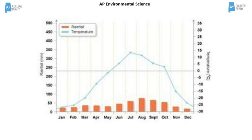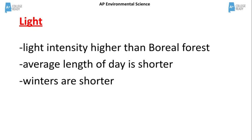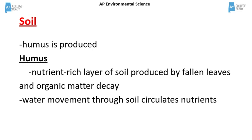Light intensity is higher and the average day length is shorter. Winters are shorter than in the taiga. The soil in the temperate deciduous forest is very fertile. Humus is the nutrient-rich layer of soil produced by fallen leaves and organic matter decay. Water movement through the soil circulates the nutrients.